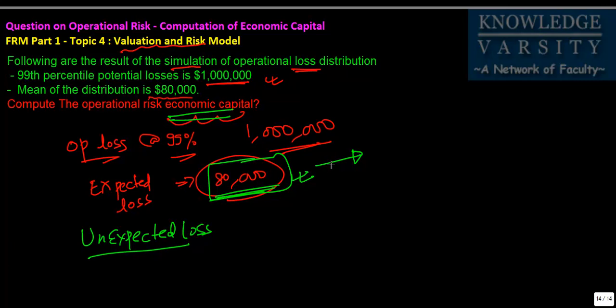This you will put in your profit and loss statement. You will say okay this is the loss I will make, but your unexpected loss you will not put in your profit and loss statement. You will put a buffer in your balance sheet to have an economic capital to sustain these losses.